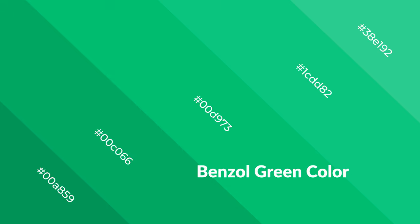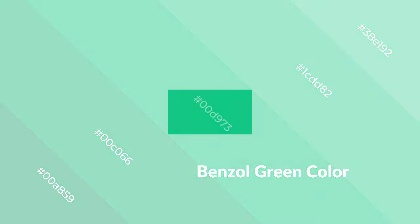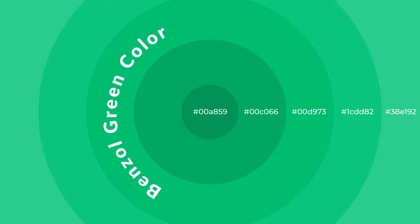Cool colors are like water, ice, sky, grass, soft and snow. You can see them used in baby products.